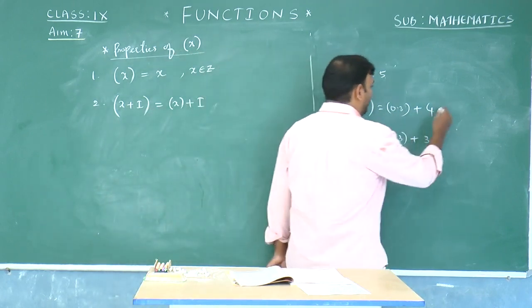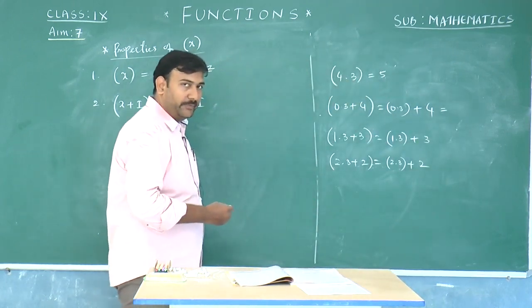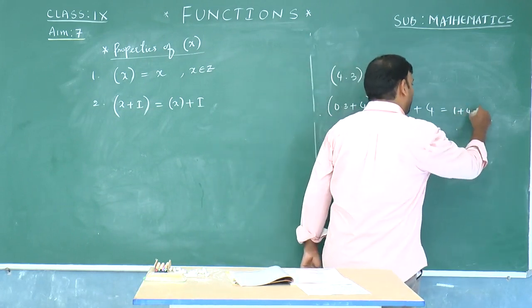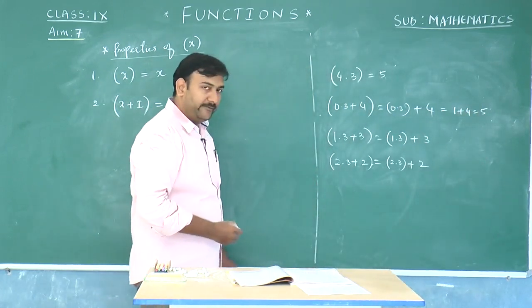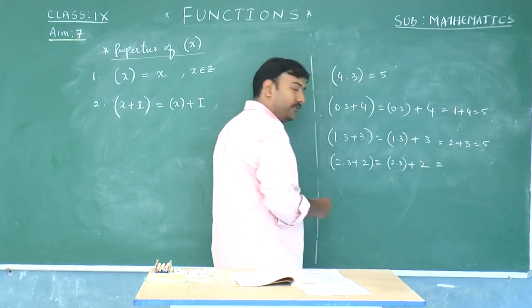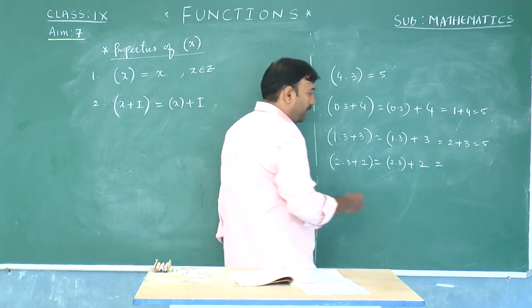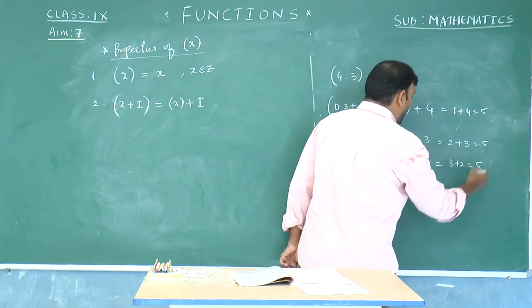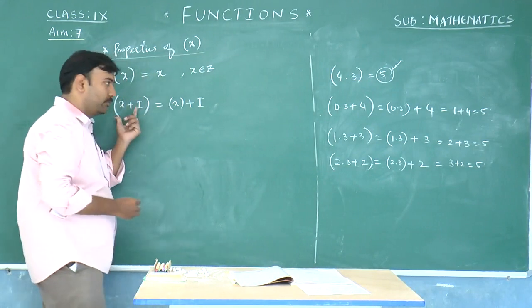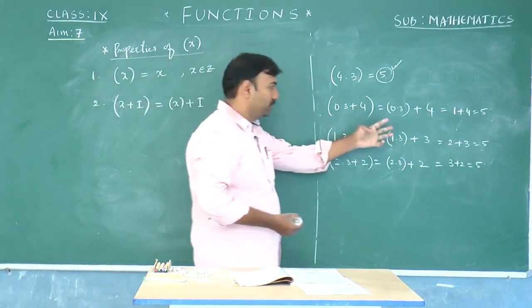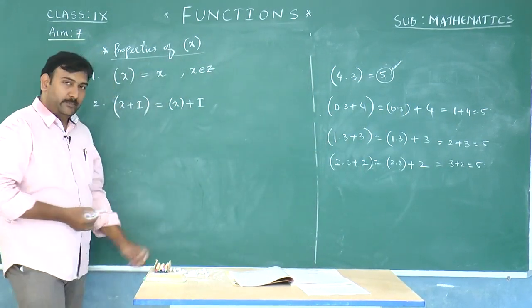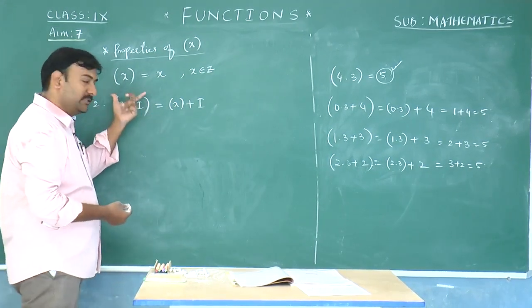The least integral value of 0.3 is the number to the right side of the number line, which is 1. So 1 + 4 = 5. Similarly, the least integral value of 1.3 is 2, so 2 + 3 = 5. And the least integral value of 2.3 is 3, so 3 + 2 = 5. Whatever way you apply this property, the result remains the same. The integer can be taken out of the bracket to simplify.